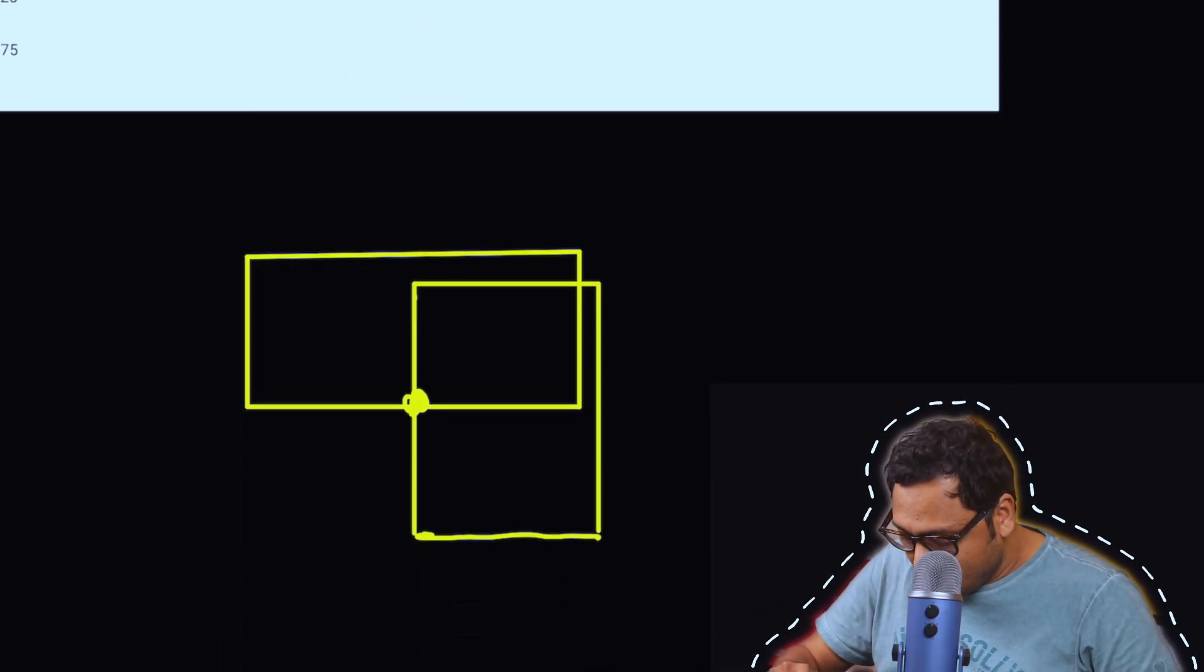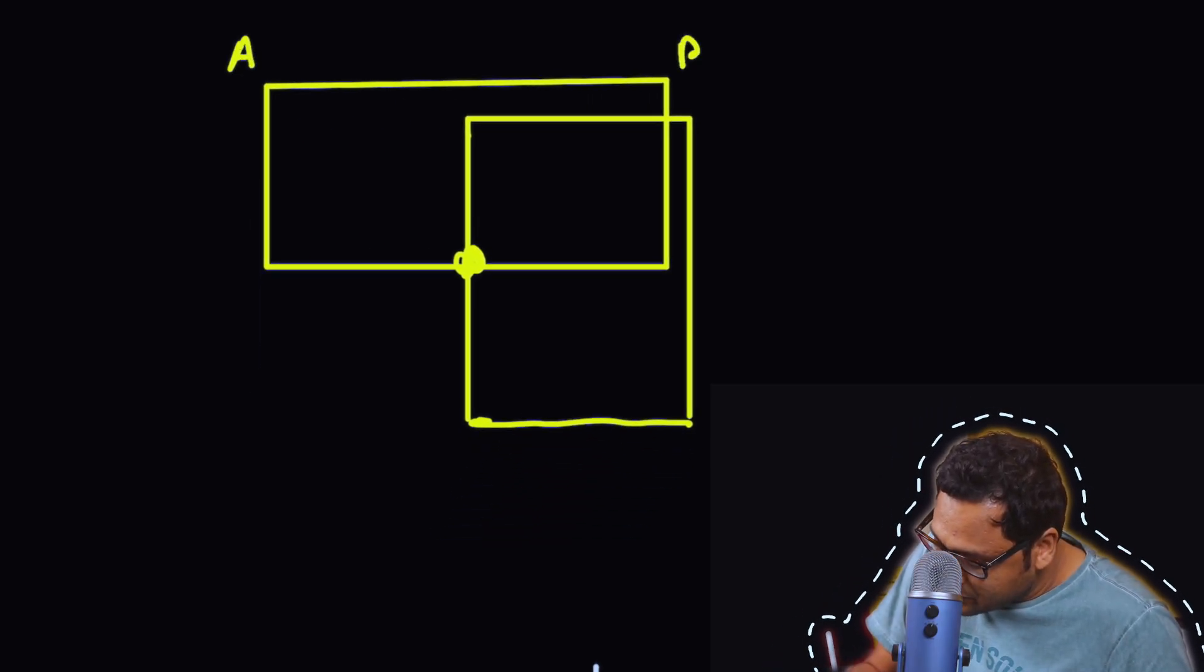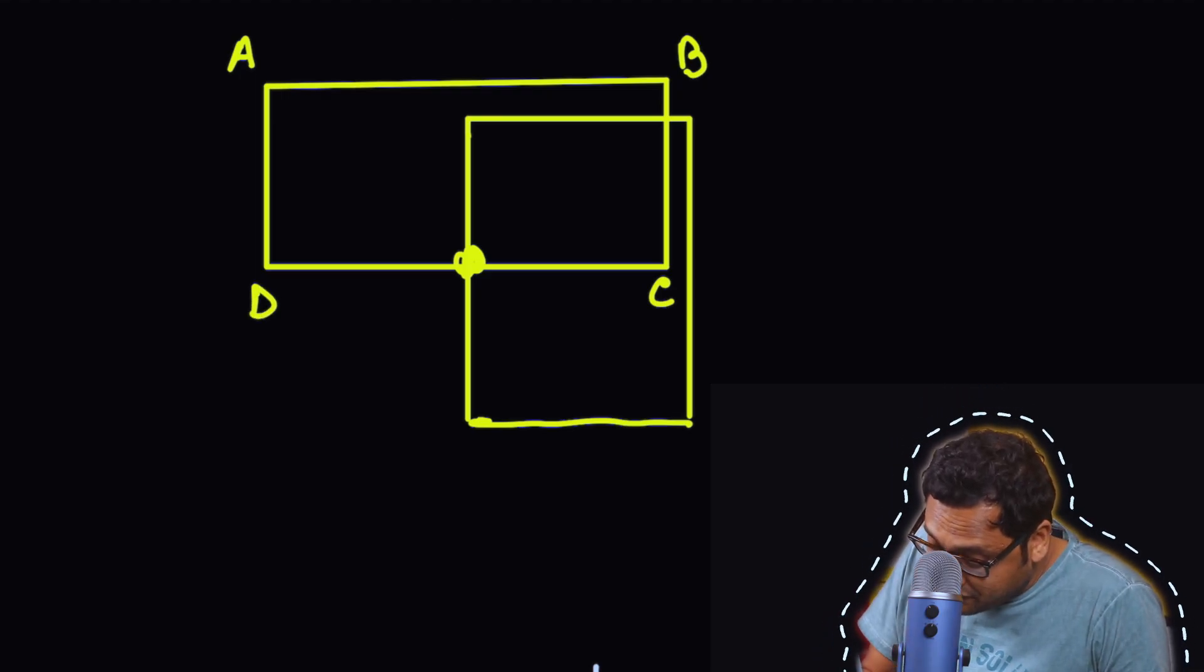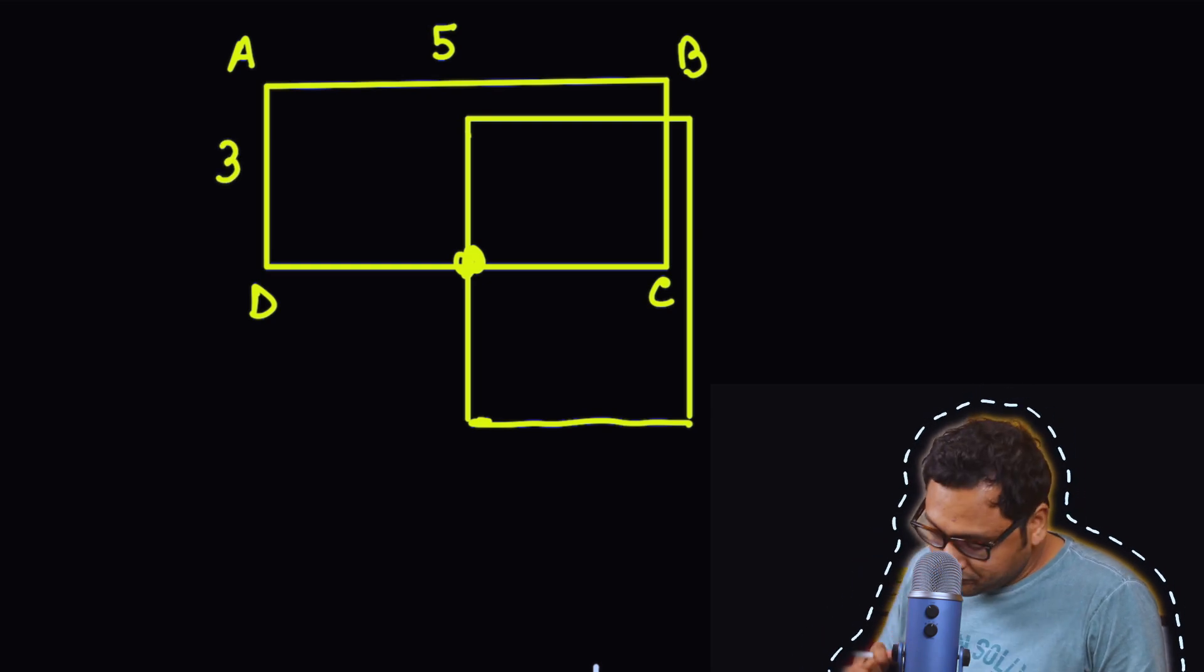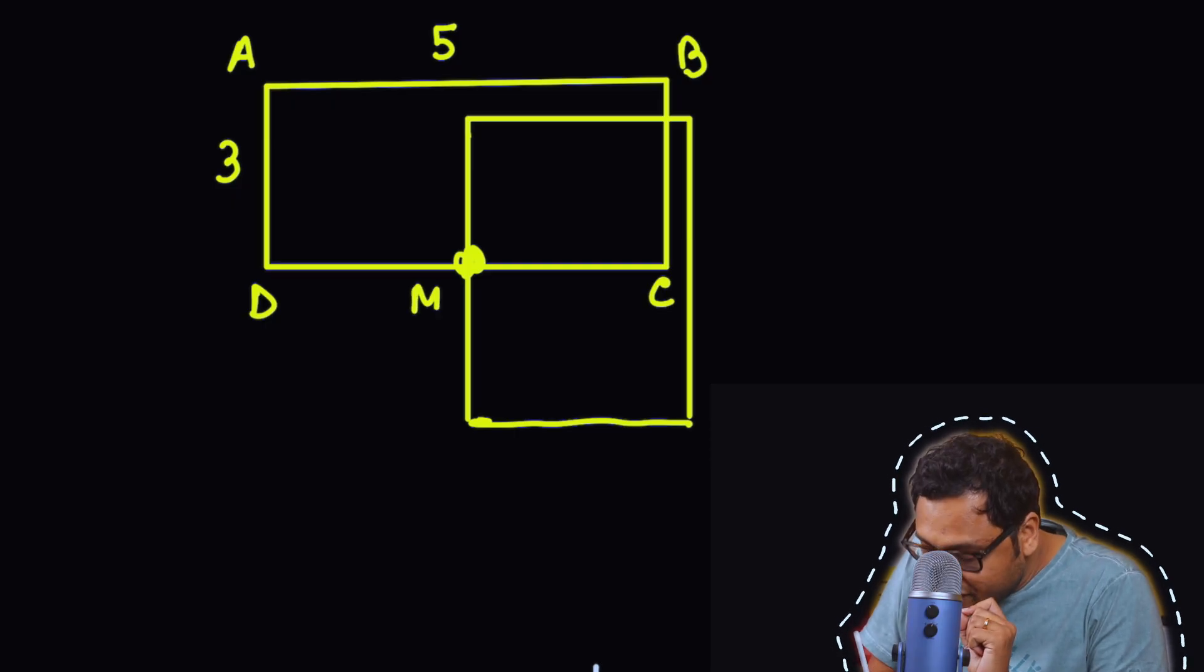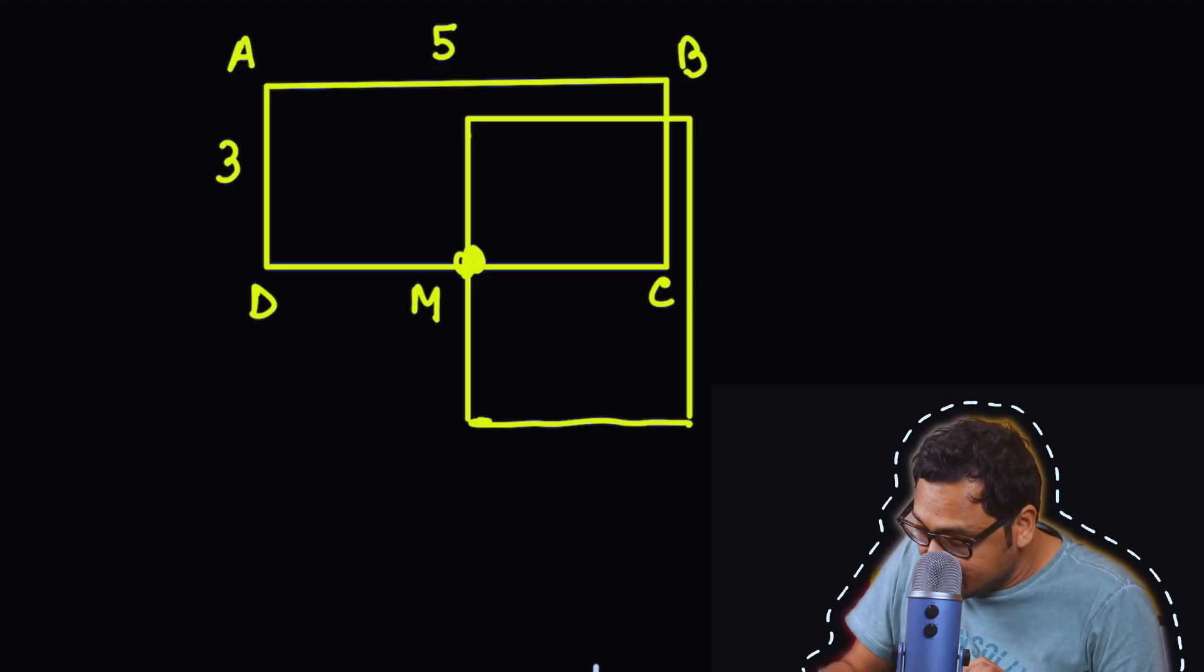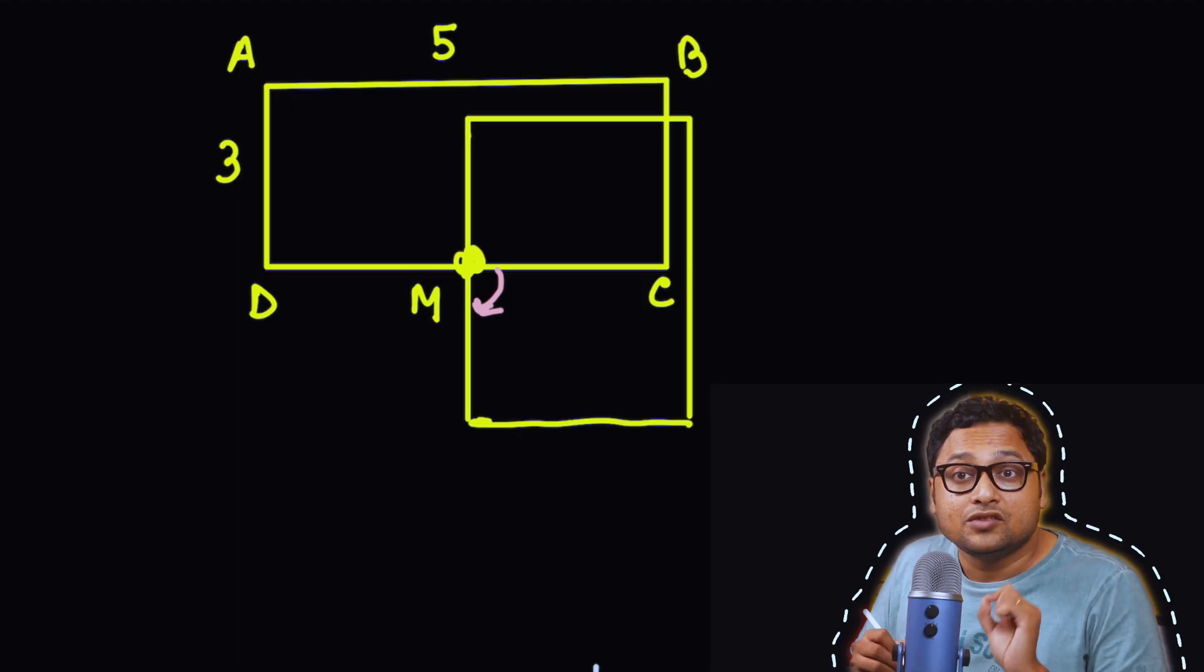The problem says that we have a rectangle ABCD. This particular rectangle is 5 units long and 3 units tall. What we did is that we rotated this rectangle about the midpoint of DC. So M is the midpoint of DC and we have rotated the rectangle about it through 90 degrees.